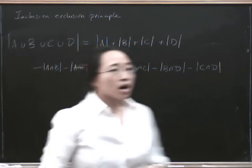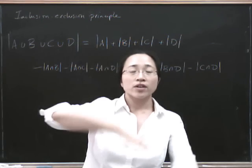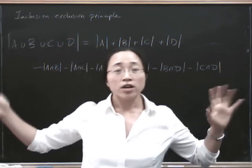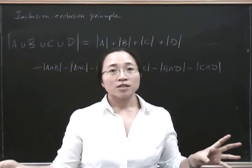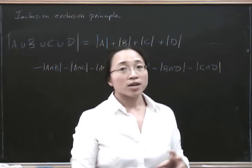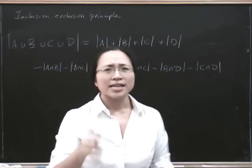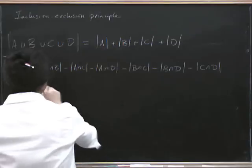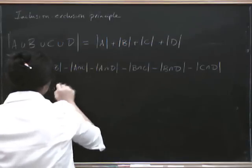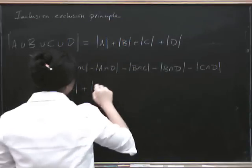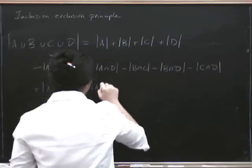So now I go, okay, now I've subtracted everything in the pairwise things, but oh no, that means that I've subtracted too many things, because I've subtracted the stuff in the threewise intersections too many times, so I need to add those back in now. So I'm going to add back in everything in the three-way intersection A, B, C, and everything in the three-way intersection A, B, D.